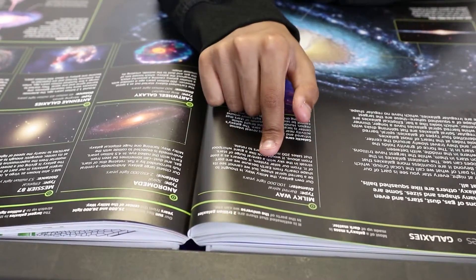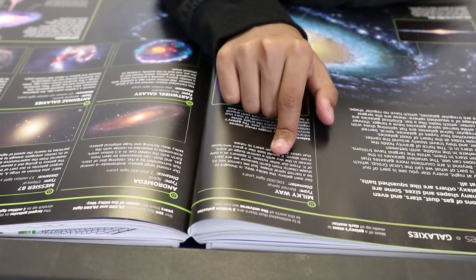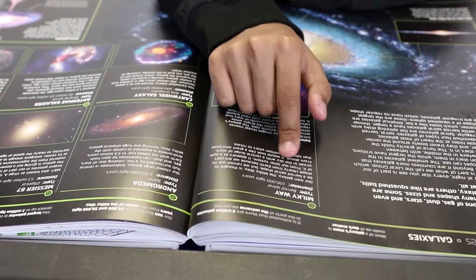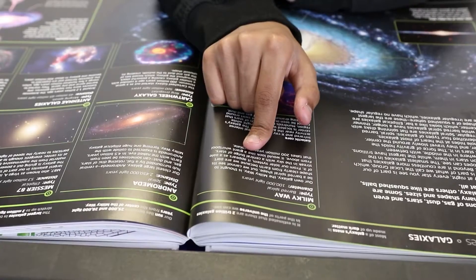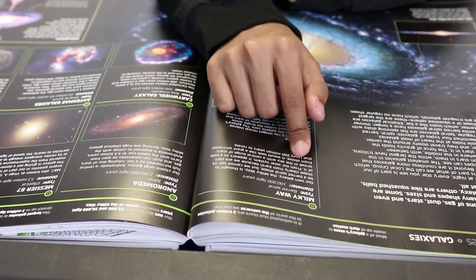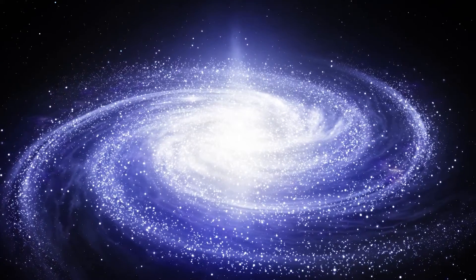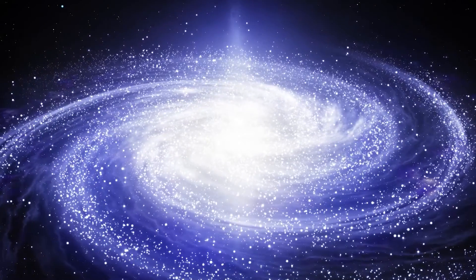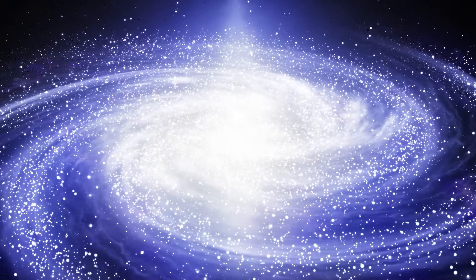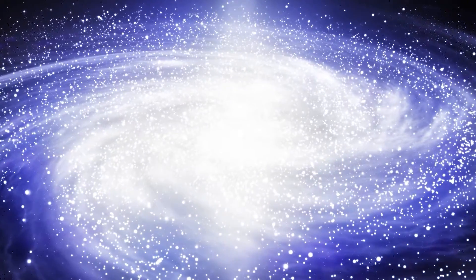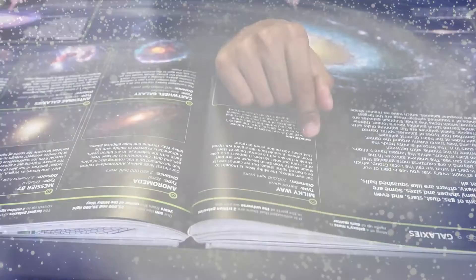But we cannot see its shape clearly from Earth because we are part of it. From our solar system, it appears as a pale streak in the sky with a central bulge of stars. From above, it would look like a giant whirlpool that takes 200 million years to rotate.